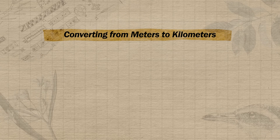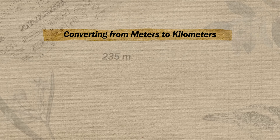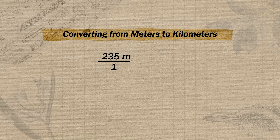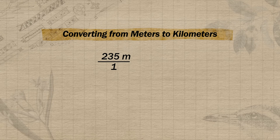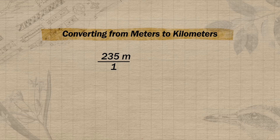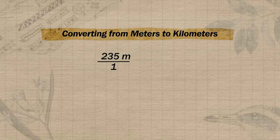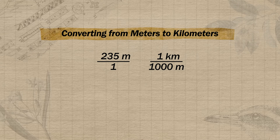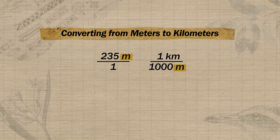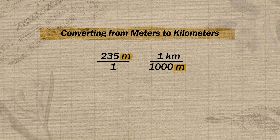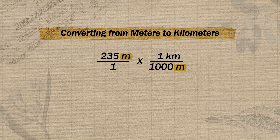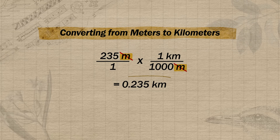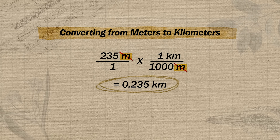Let's say we want to convert 235 meters to kilometers. We write 235 meters over one on the left side — putting meters on top reminds us to put meters on the bottom in our conversion factor. Using the conversion factor of 1 kilometer over 1000 meters, we can cancel out meters and are left with kilometers. Carrying this through: 235 meters divided by 1000 equals 0.235 kilometers.